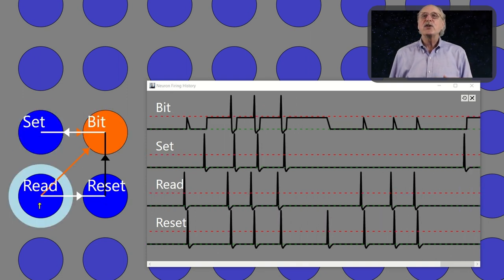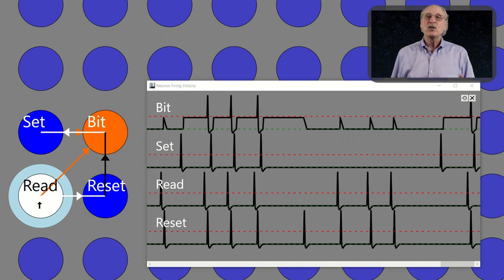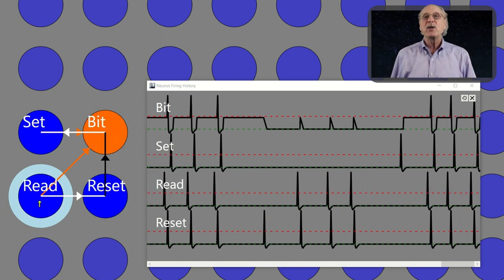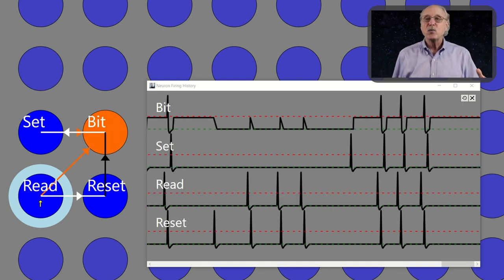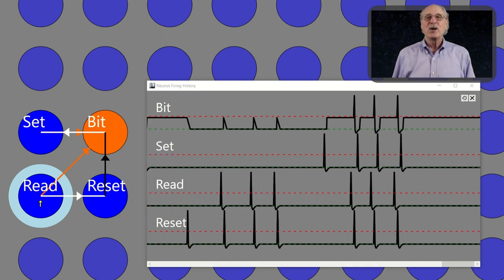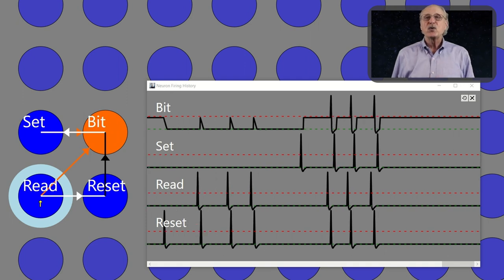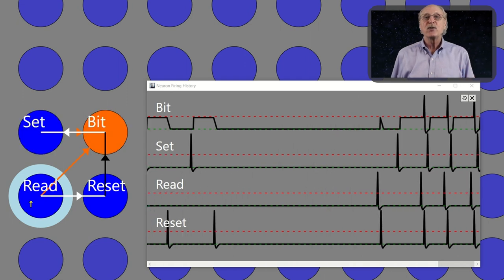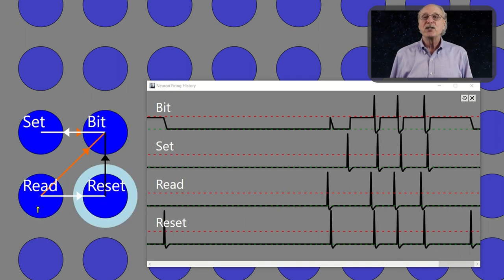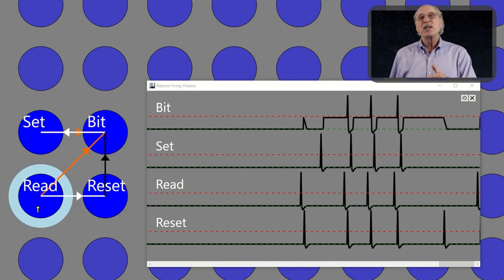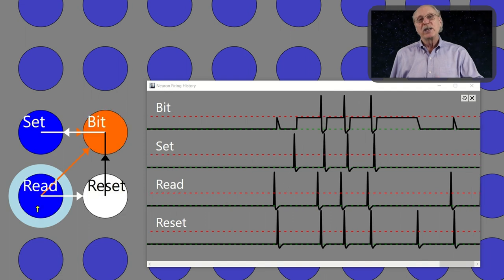As an added feature, the read neuron can also fire the reset neuron, and the firing memory bit can cause the set neuron to fire again, which will restore the memory bit once more. This means that the memory can store the bit, either 1 or 0, without consuming any energy by spiking, until the memory is needed. Every time the bit is read, it is cleared and restored.